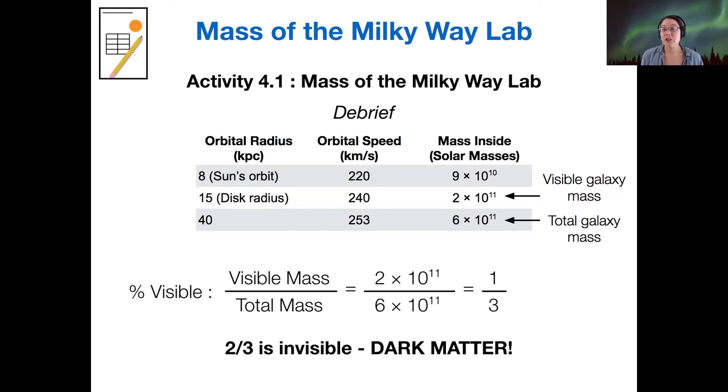And actually, the fraction is even bigger because I gave you 40 kiloparsecs as the orbital radius. But the dark matter halo surrounding our galaxy seems to extend farther than that. So I think it's around 90 kiloparsec diameter. But it's also spherical. So there's a little bit of an update to these calculations that have to be done in order to account for the fact that that halo is spherical, whereas most of the visible mass is actually restricted to the disk.